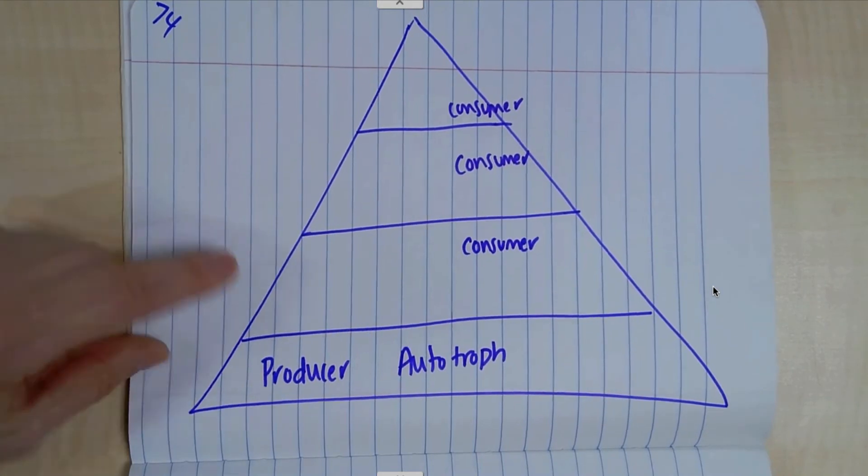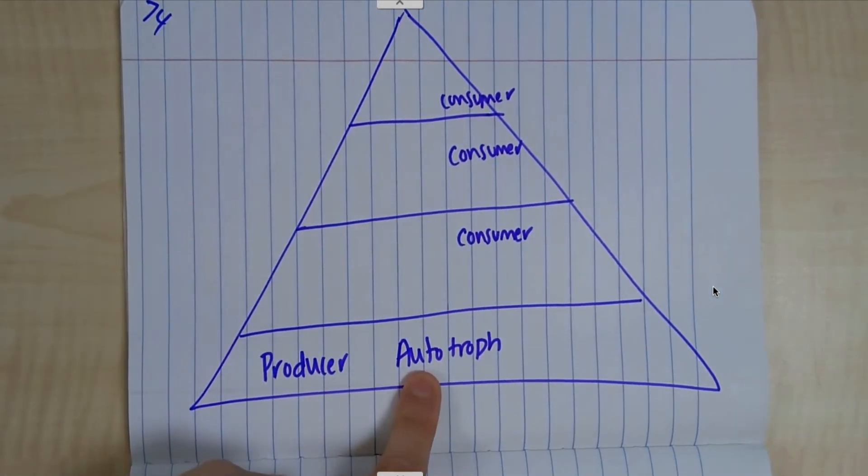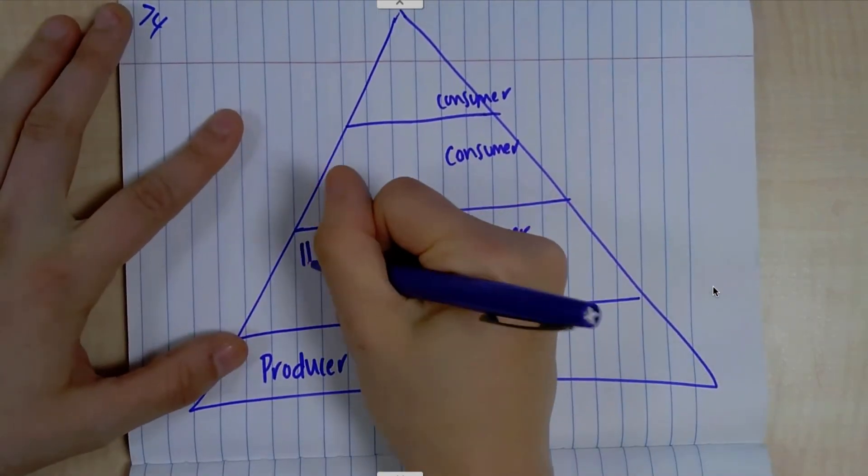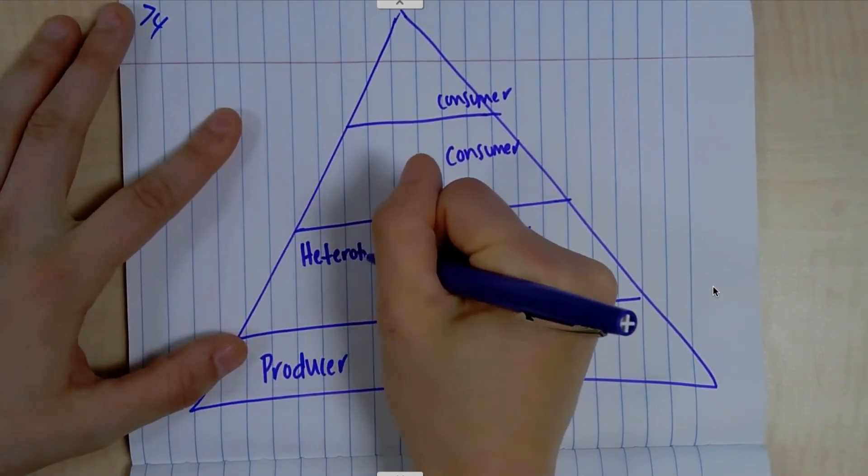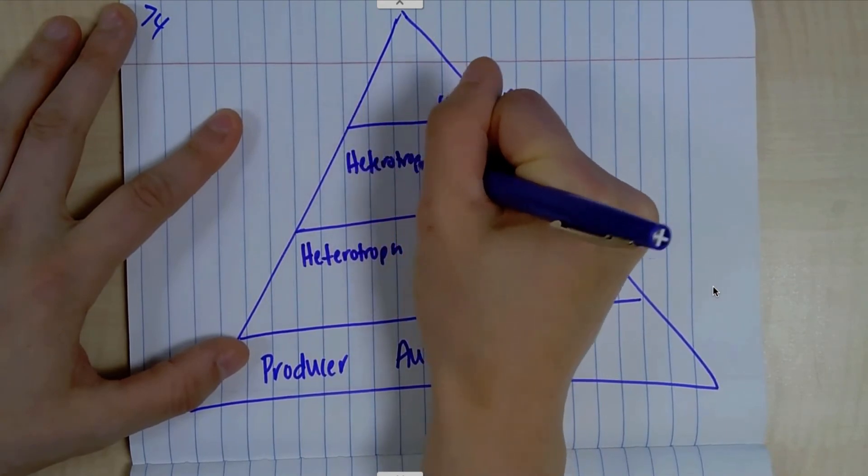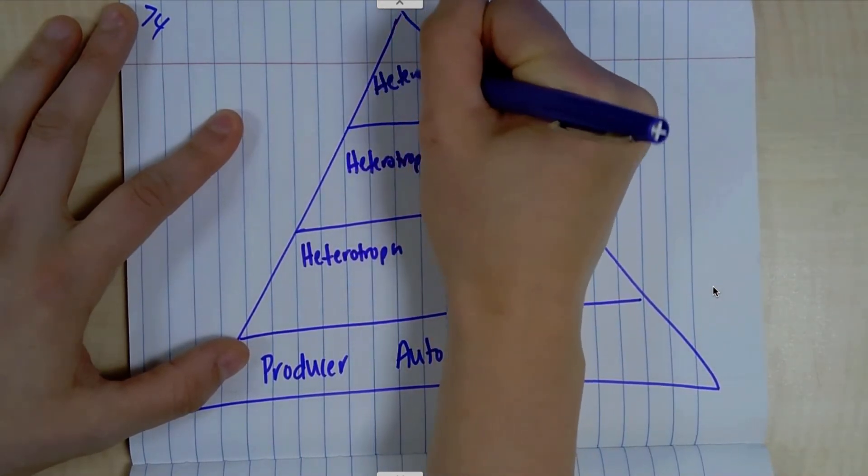Now, if we're talking about autotroph, autotroph means that it makes its own food from sunlight through photosynthesis. Well, a heterotroph has to get its food another way, such as a consumer. So this would be a heterotroph, and same thing with this, heterotroph, and heterotroph.